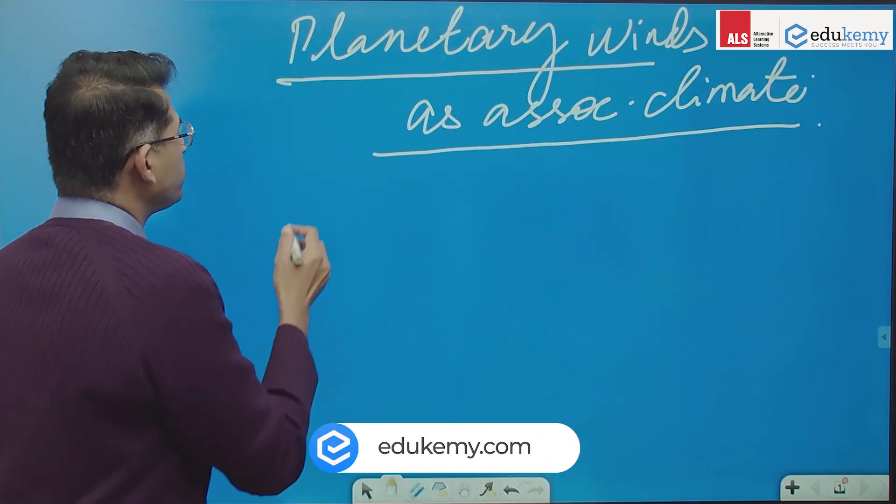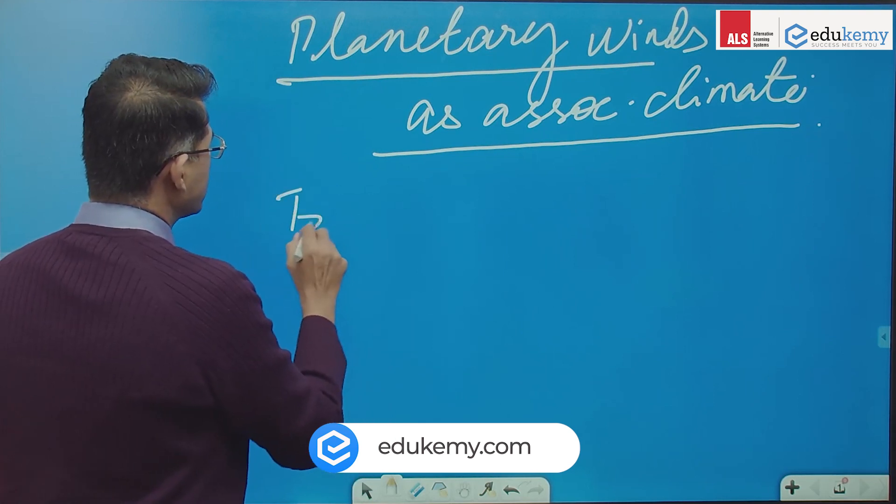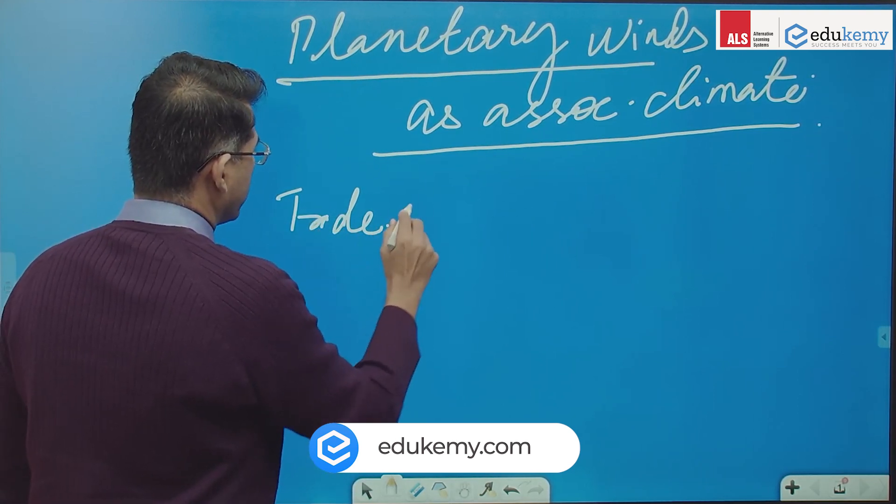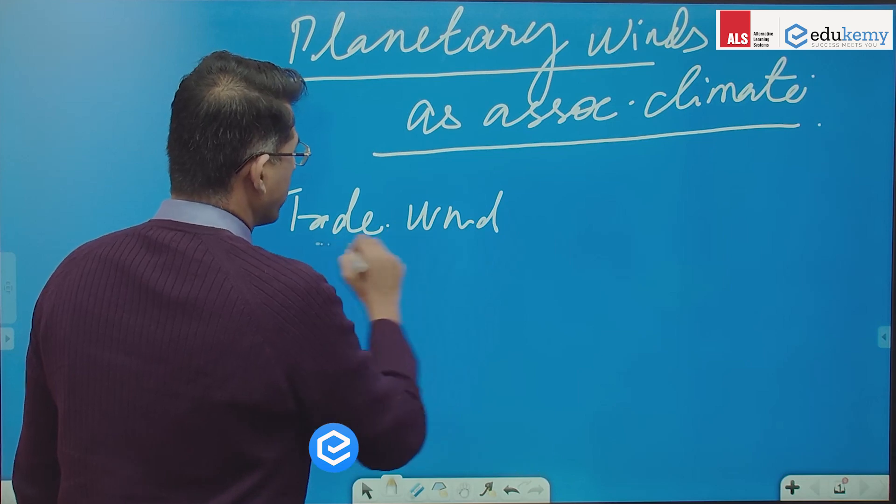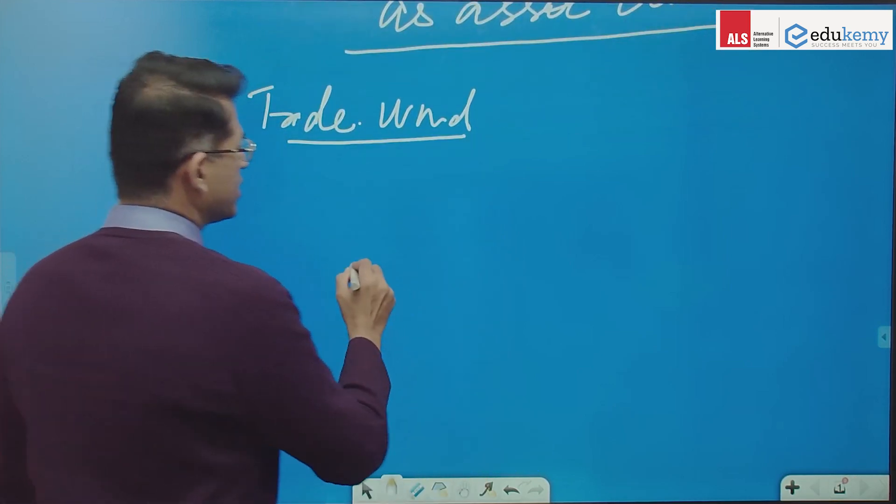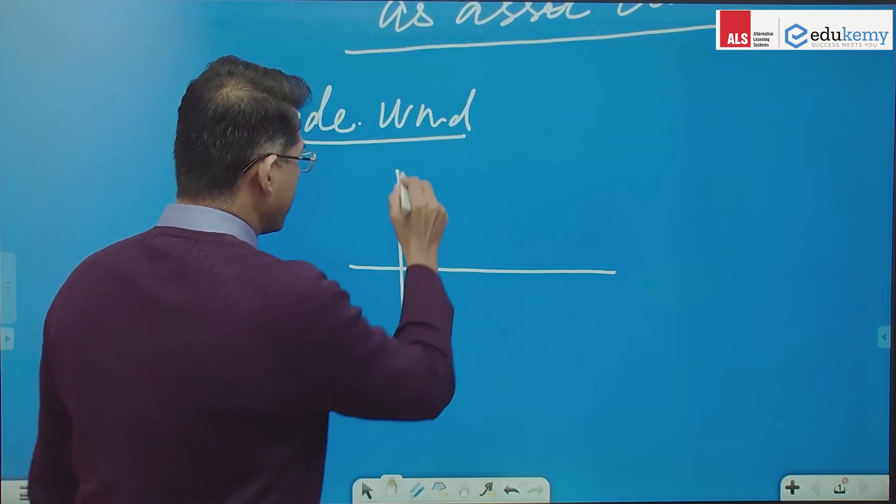So in this we have trade winds first. So in trade winds, you need to remember that if this is the equator and this is the land that we have,